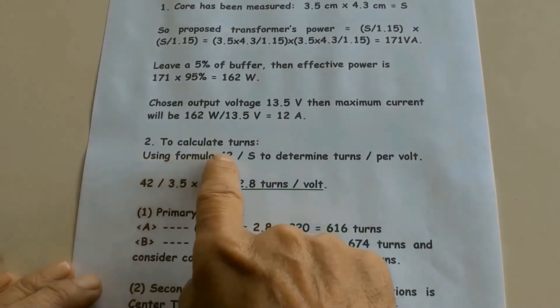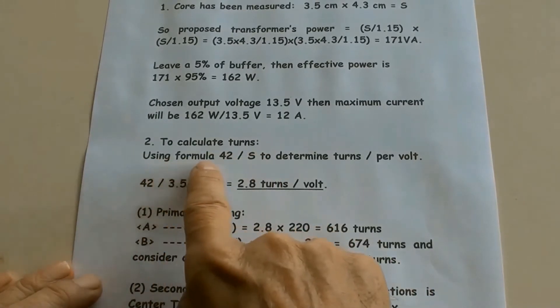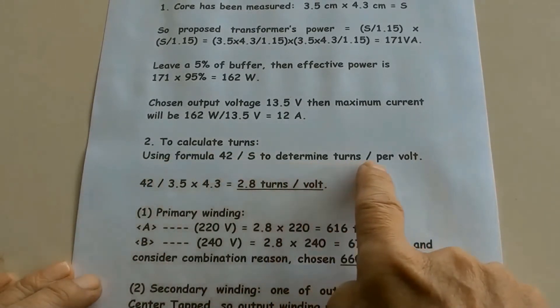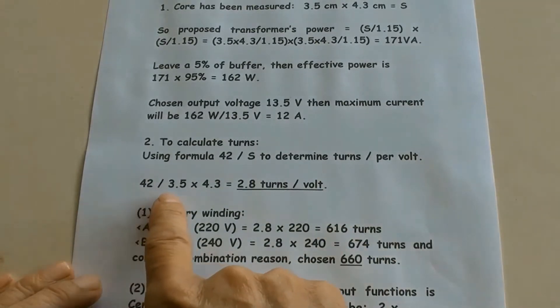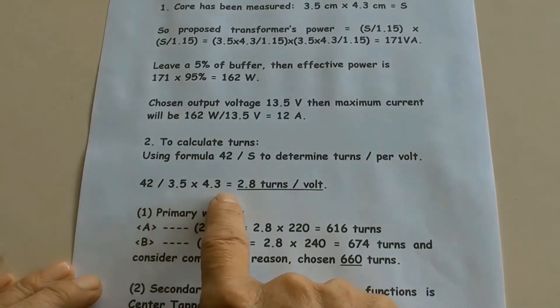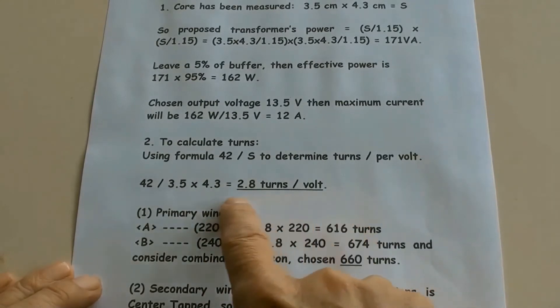To calculate turns, using formula 42 over S to determine turns per volt. 42 over 3.5 times 4.3 equals 2.8 turns per volt.